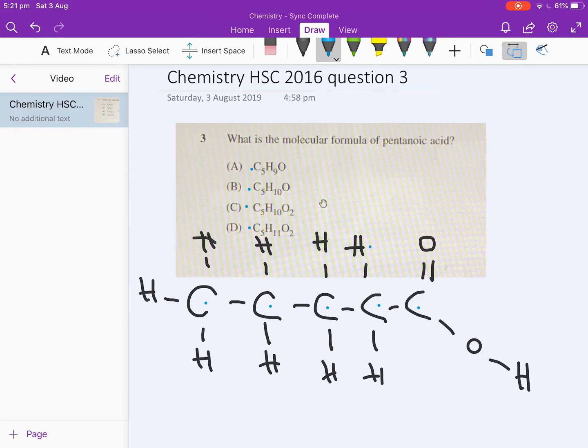There is one, two, three, four, five, six, seven, eight, nine, ten hydrogens. So I can eliminate A and D because they both have the wrong number of hydrogens.